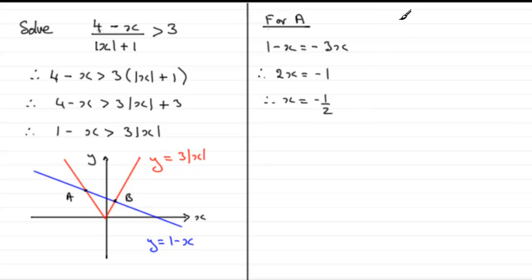And then if I look at b, I'm looking for where this branch of the graph of y equals 3 mod x intersects the graph of y equals 1 minus x. This branch would be the positive value of x, that would be just simply 3x. So we have 1 minus x equals 3x.